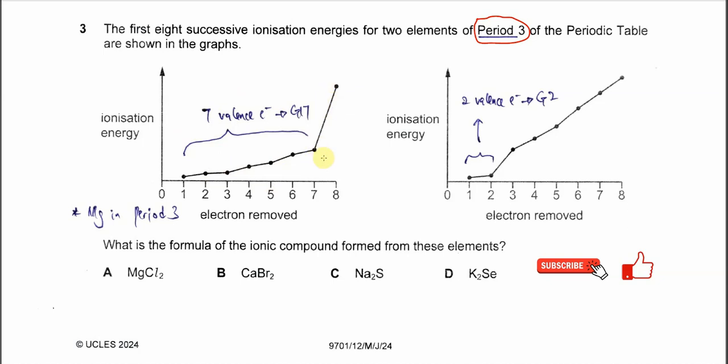After the seven electrons, the eighth electron is from the inner shell. We are quite sure that these seven electrons are the valence electrons. Seven valence electrons means this is Group 17.